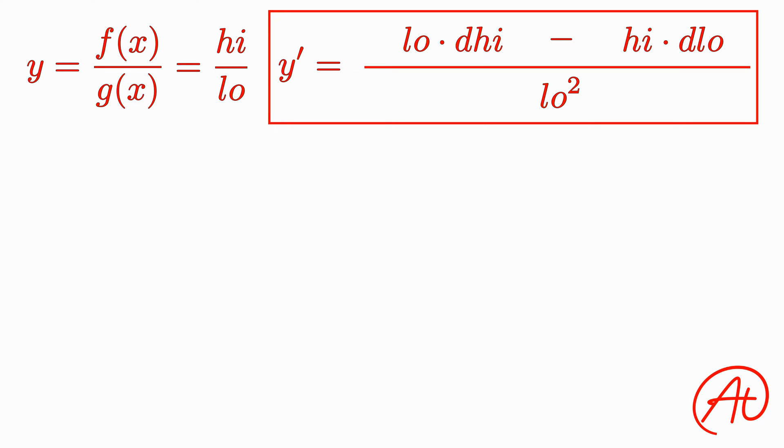But if you remember that the phrase starts with low, the rest will always follow. Low d high minus high d low, all over low squared.